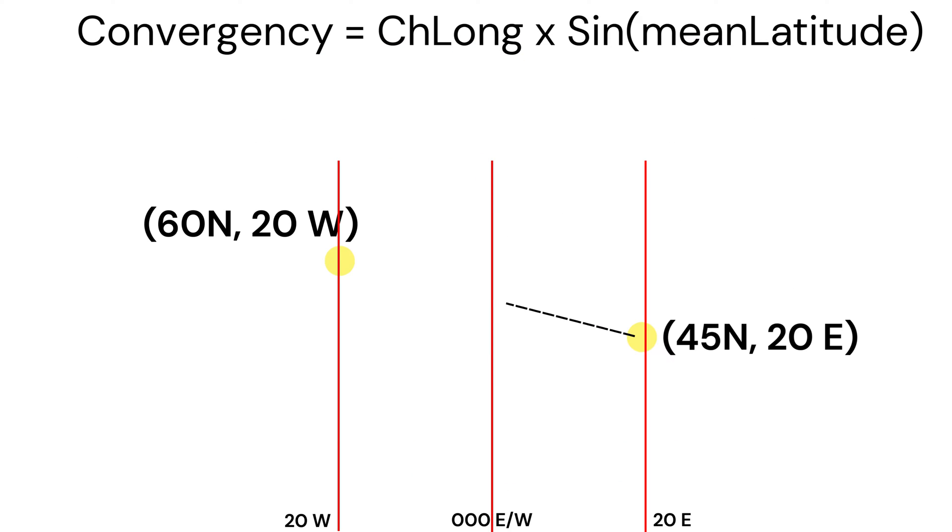Let's say you're traveling from 45 degrees north, 20 degrees east to 60 degrees north, 20 degrees west. To find convergency between these two points, let's find change in longitude. We have two places: 20 degrees east and 20 degrees west.